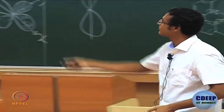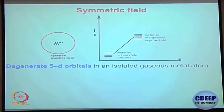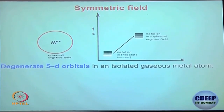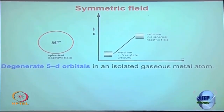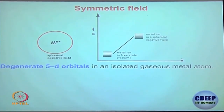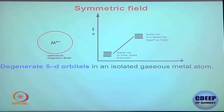If d orbital energies are at a certain level, when you bring ligands from equal distances in all directions, the energy of all the d orbitals will go up. Think of it like a spherical cricket ball — if you put pressure on it from all directions, it gets destabilized. Similarly, the approaching ligands destabilize the metal center.